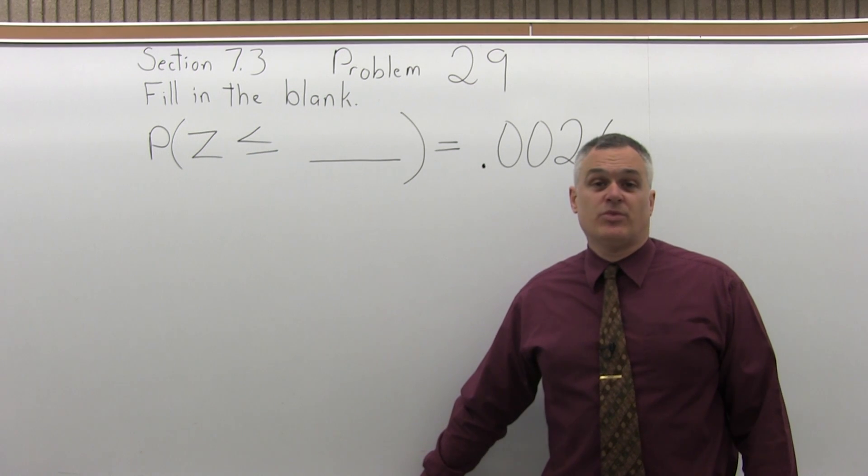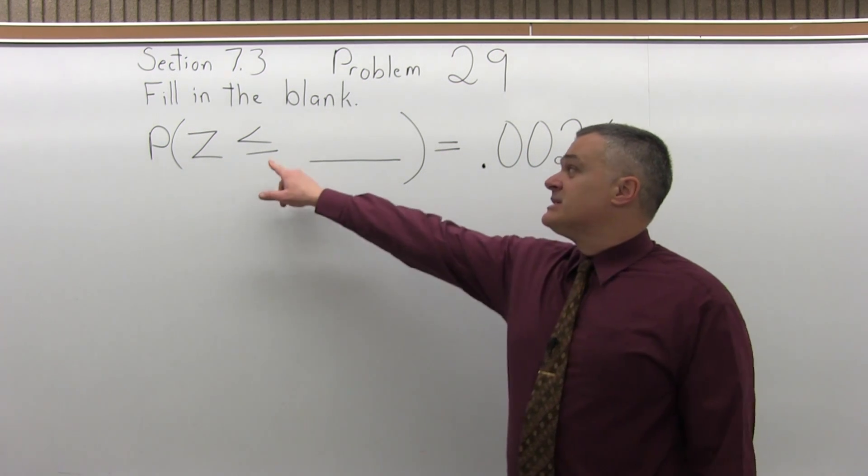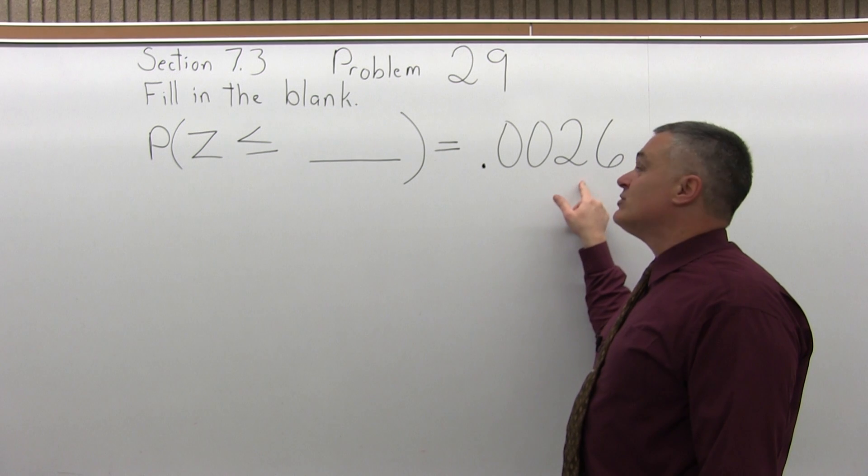This is Section 7.3, Problem number 29. It says, fill in the blank, the probability that Z is less than or equal to blank equals .0026.